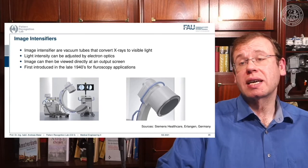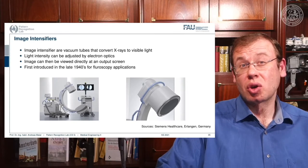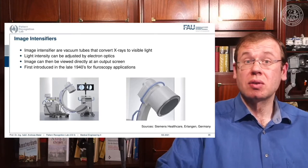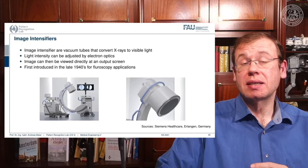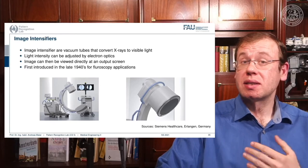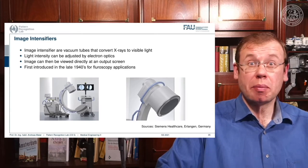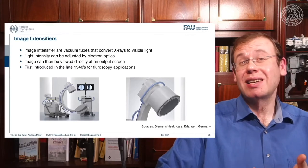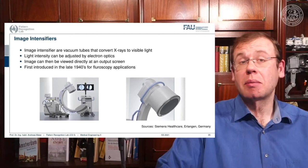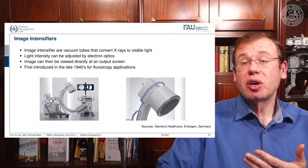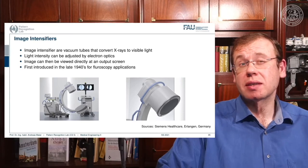We will discuss image intensifiers and flat panel detectors — these are two key technologies used to detect x-rays. Nowadays most systems use flat panel detectors, but if you see an image intensifier you should know how it works, which is why we still cover it here. We also want to discuss sources of noise in x-ray imaging. X-ray image intensifiers are essentially vacuum tubes that convert x-rays into visible light, and the nice thing is that we can adjust the magnification in these systems.